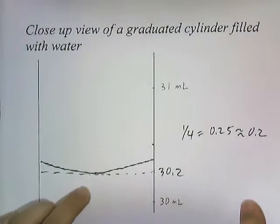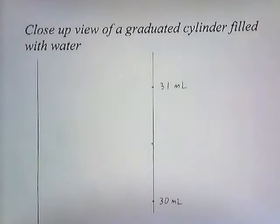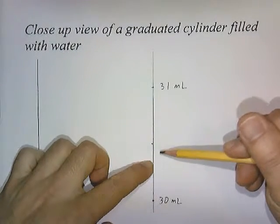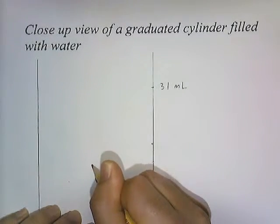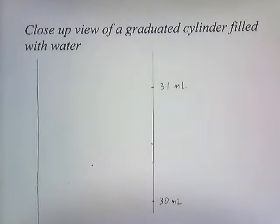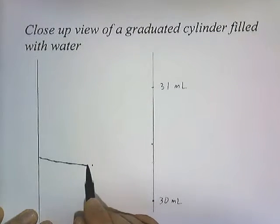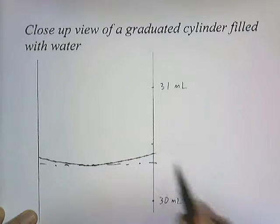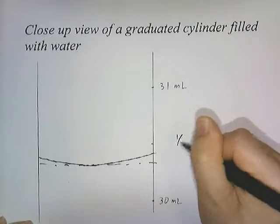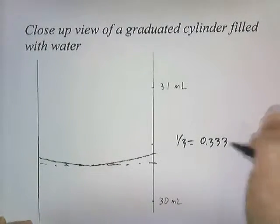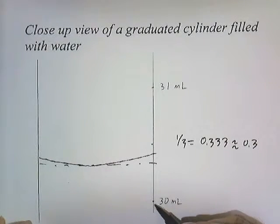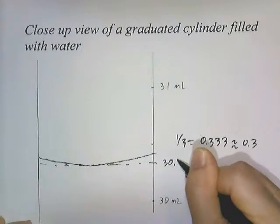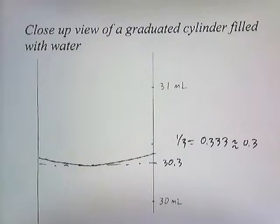Now let's suppose that instead of one quarter of the way in between, it falls one-third of the way in between. Human beings are pretty good at estimating how much one-third of something is. I think one-third would be about here. Let's say our meniscus falls about a third of the way over. One-third is the same as .33, so we can just call that .3. We can call this 30.3. If it's a third of the way up, we'll call it 30.3 milliliters.